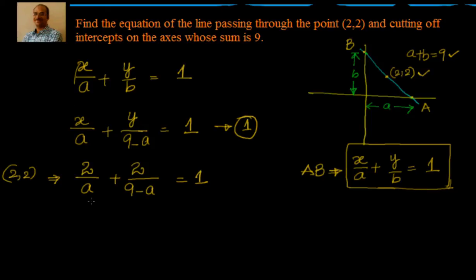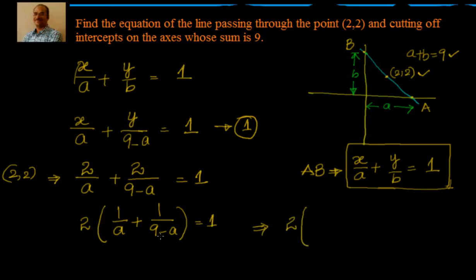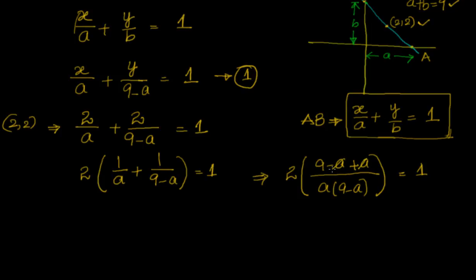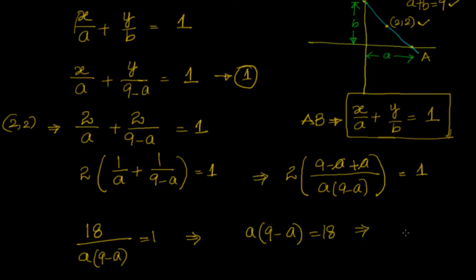This is now a simple quadratic equation. Taking 2 out: 2 × (1/a + 1/(9-a)) = 1. Taking LCM as a(9-a), the numerator becomes (9-a) + a = 9, giving 18 / [a(9-a)] = 1. Therefore a(9-a) = 18, or 9a - a² = 18, which gives us a² - 9a + 18 = 0.